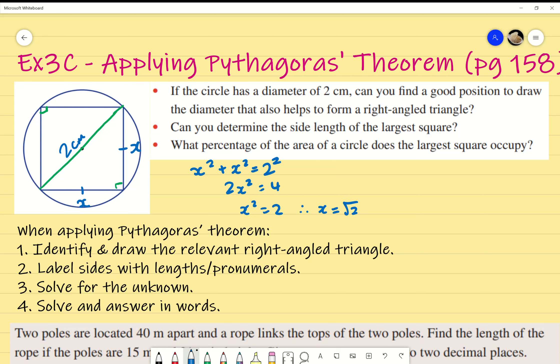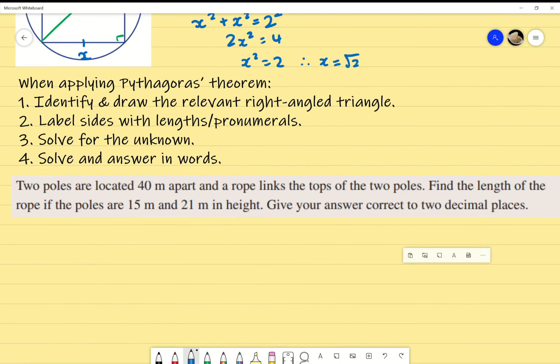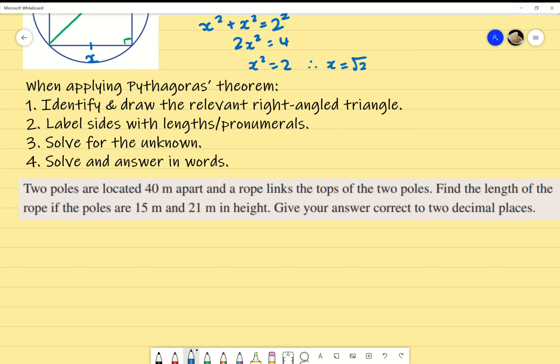Of course, we're using Pythagoras theorem in non-conventional circumstances, where we need to be able to identify a triangle and be able to solve it from there. I've just written down four ideas that we need to make sure we focus on when we're using Pythagoras theorem to answer word problems. First thing you need to identify and draw the triangle. Of course, it has to be right angle triangle.